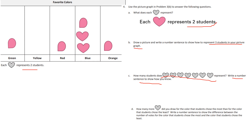And for Part D: how many more hearts did you draw for the color that students chose the most than the color students chose the least? Write a number sentence to show the difference between the number of votes for the most and the least. Work on those three problems.